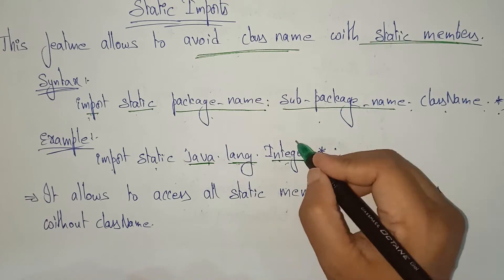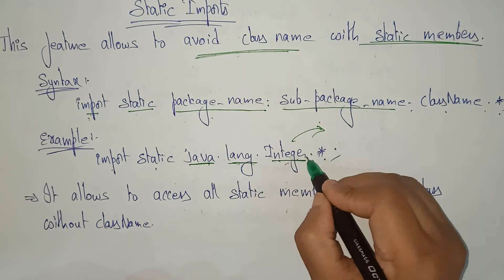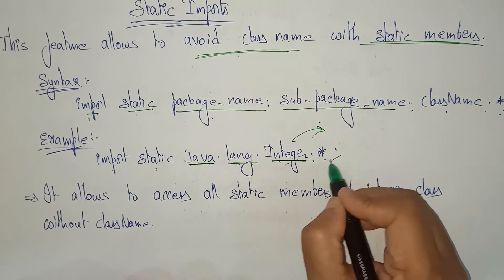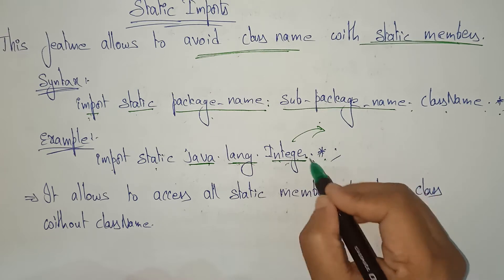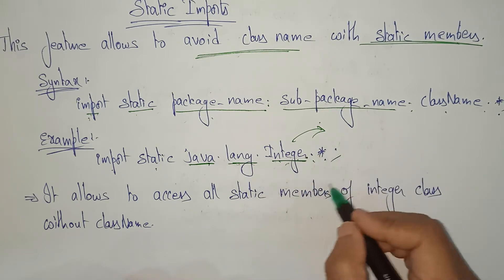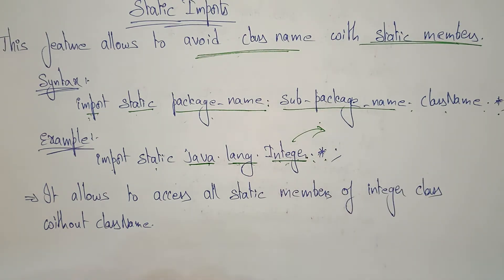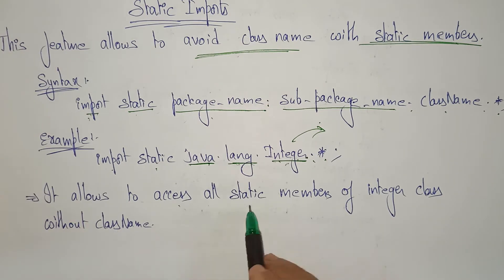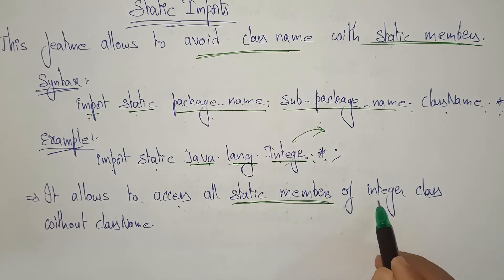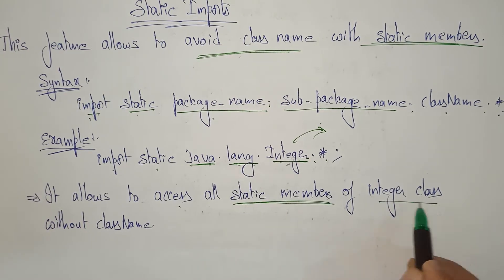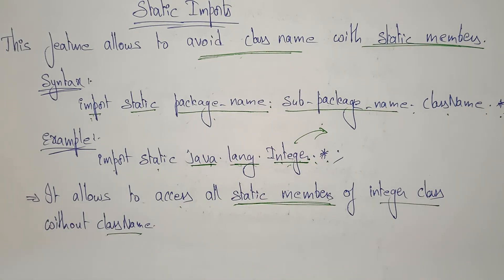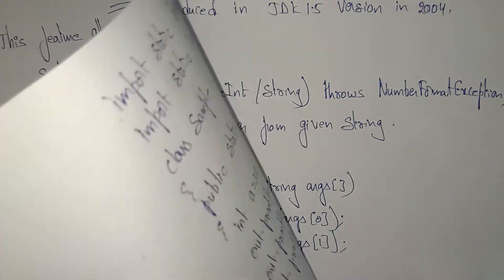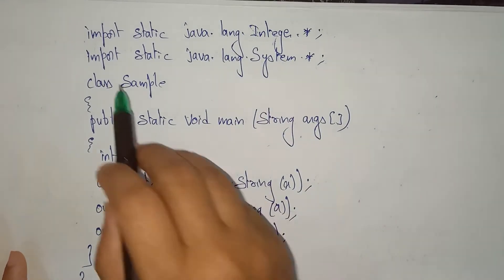Integer is a wrapper class. With this import, whatever static methods are present in the Integer class — all those static methods — you can access without using the class name.